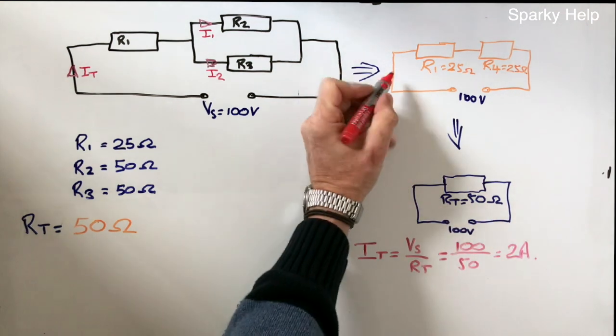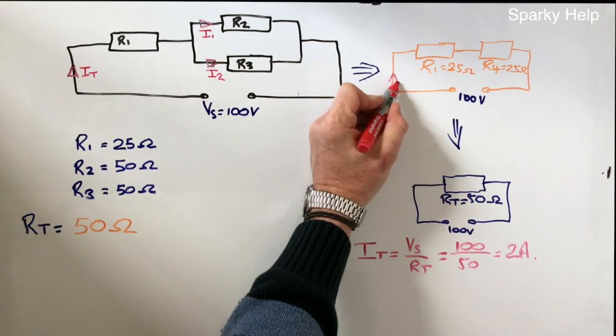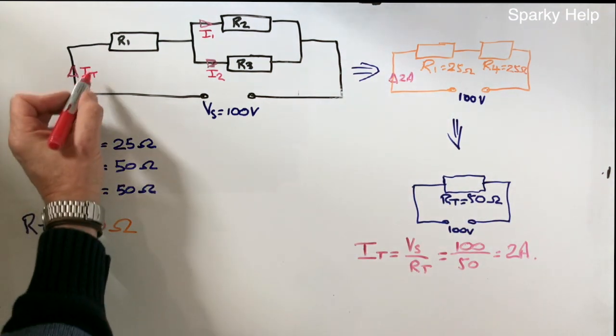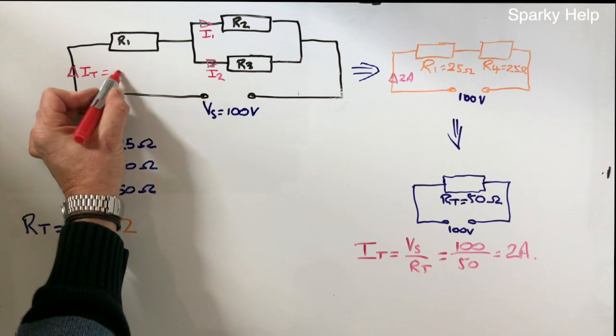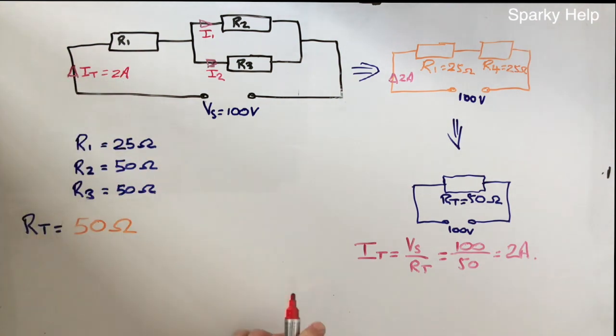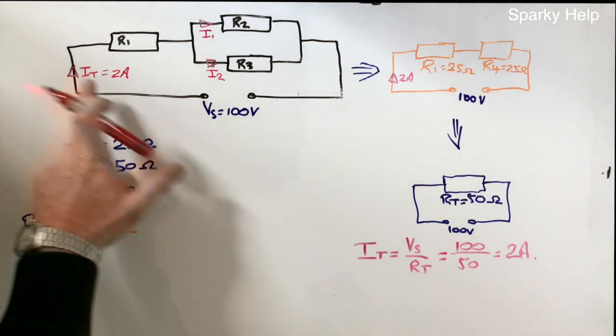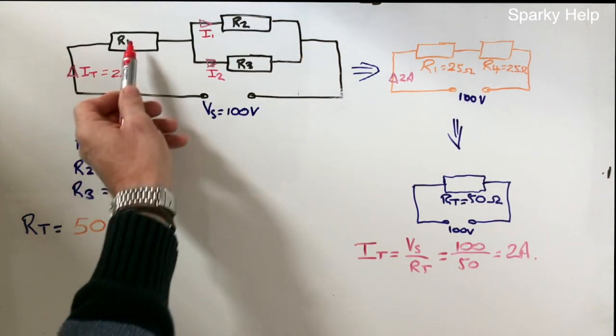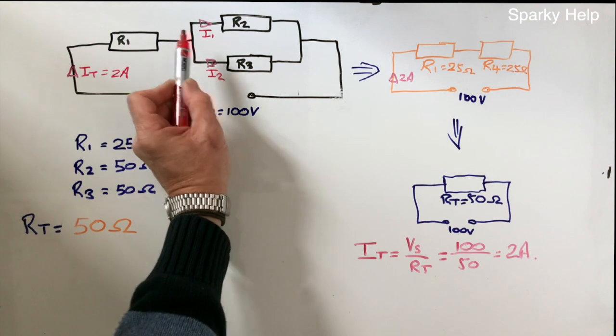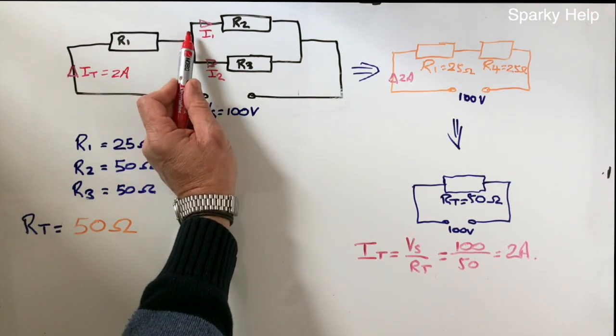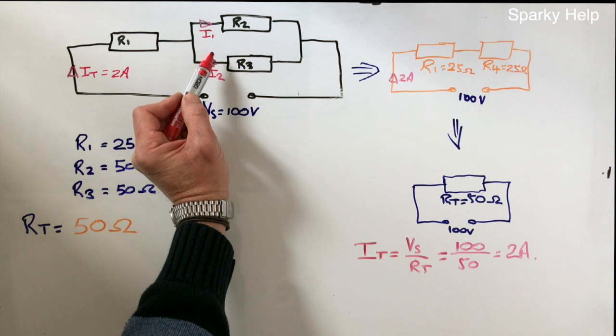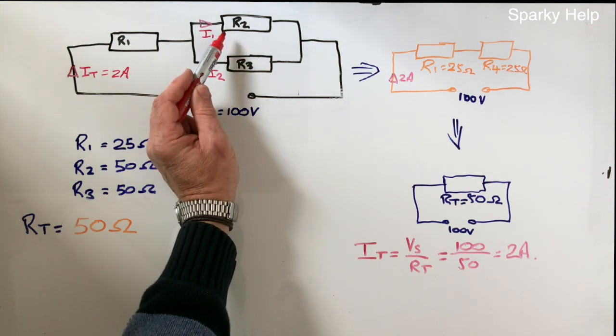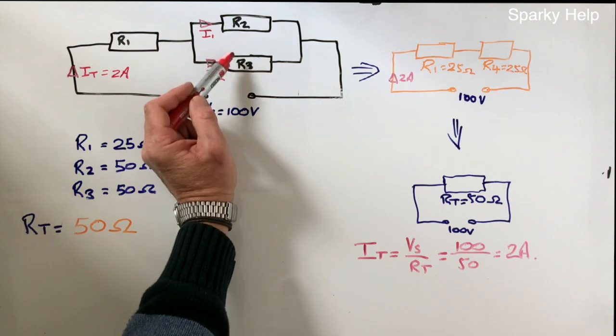This 2 amps then, would be the same 2 amps that flows around in this circuit here. More importantly, it's this 2 amps over here. This 2 amps then, flows out, must come back. So it's going to, 2 amps will pass through the R1. When it gets to this point here, it will split. And split into I1 and I2. Depending on the value of these resistors, will determine which current, and how much current, goes each direction.